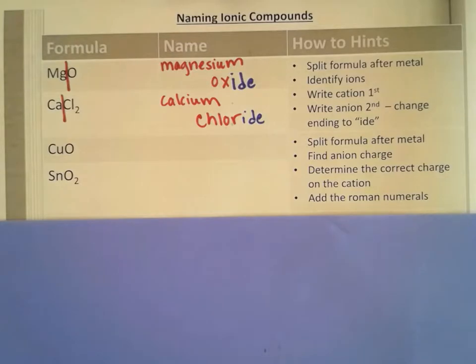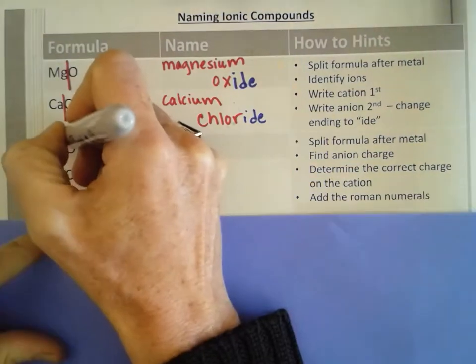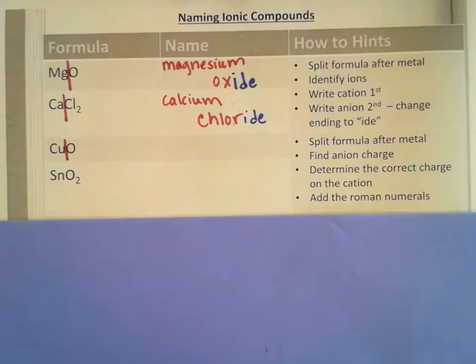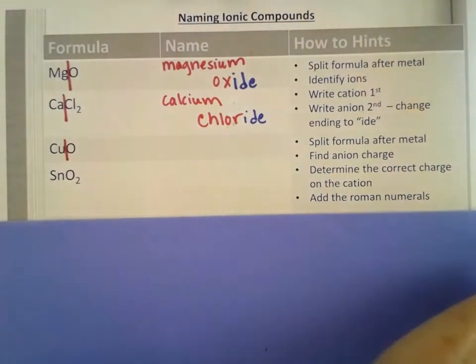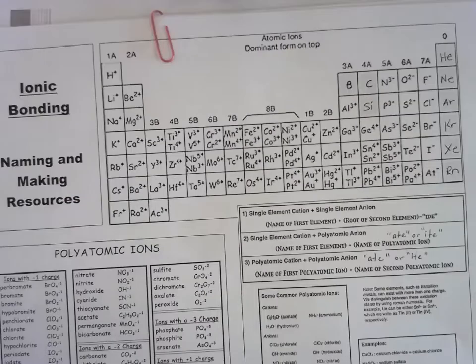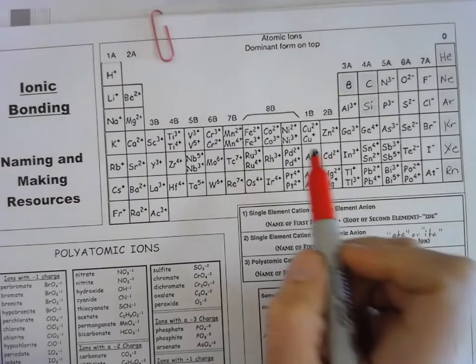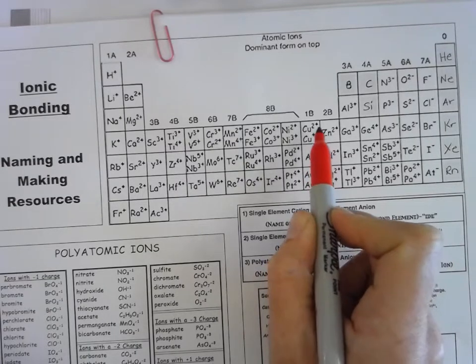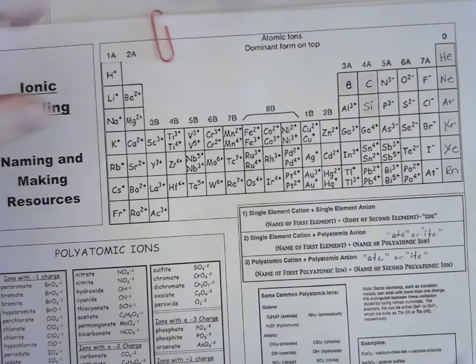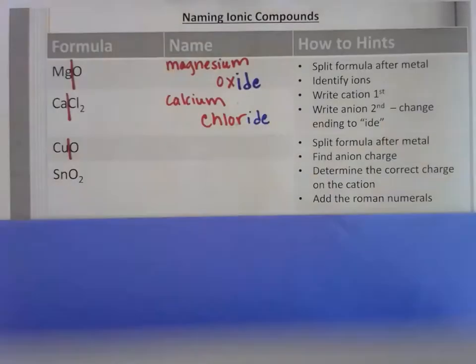And these have two hints. So we're going to split the formula after the metal. I'm going to do the same thing. And I have copper there. But this is find the anion charge next. Let's talk about why. If we go back to this chart and we look in our copper box, there are two different options. We have to figure out which option is here.